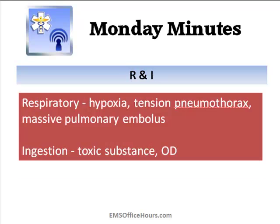The R and the I: R is the respiratory type of shock — compromise of the respiratory system from hypoxia, tension pneumothorax, or maybe a massive pulmonary embolus. Then ingestion — this is one we kind of got stuck on when trying to recall what SHRIMP CAN meant. The I is ingestion of a toxic substance or a drug overdose of some type.